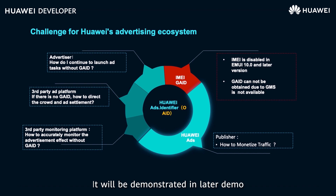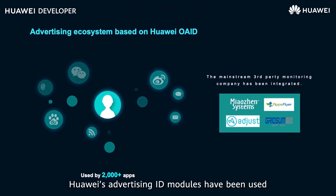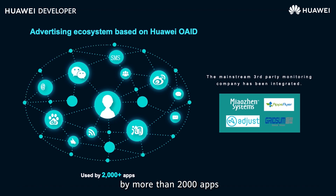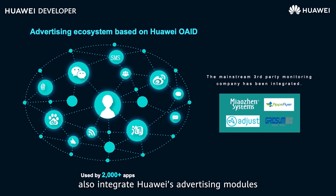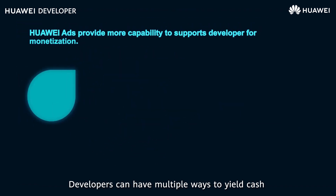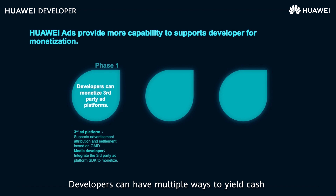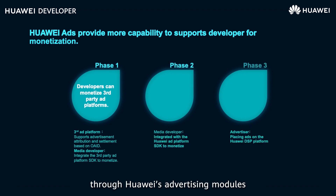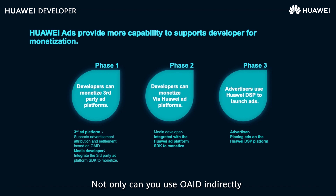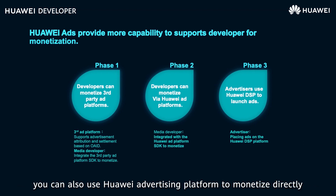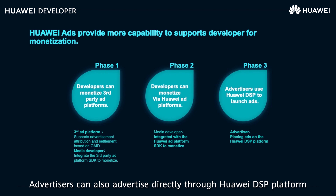Huawei's advertising ID module has been used by more than 2,000 apps, and mainstream advertising monitoring platforms also integrate Huawei's advertising module. Developers can monetize in multiple ways: you can use OAID indirectly through third-party advertising platform SDKs, or use Huawei's advertising platform to monetize directly.